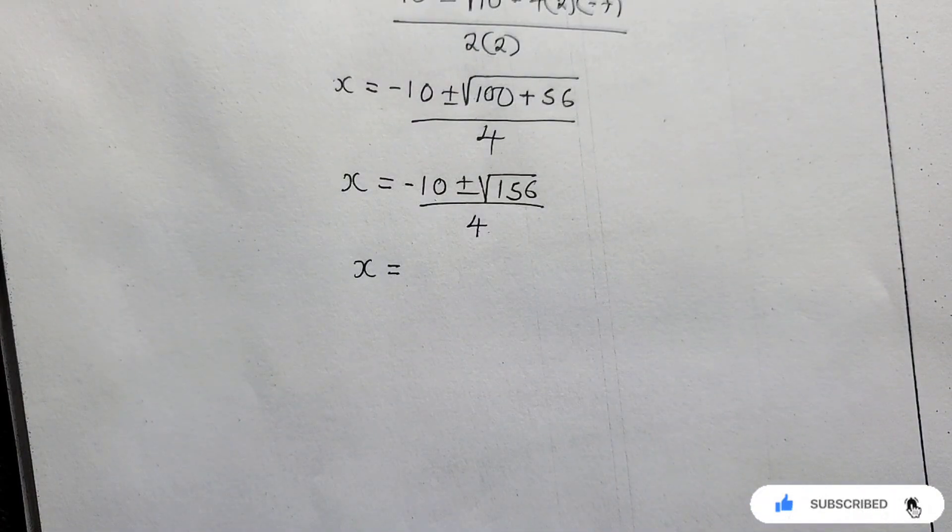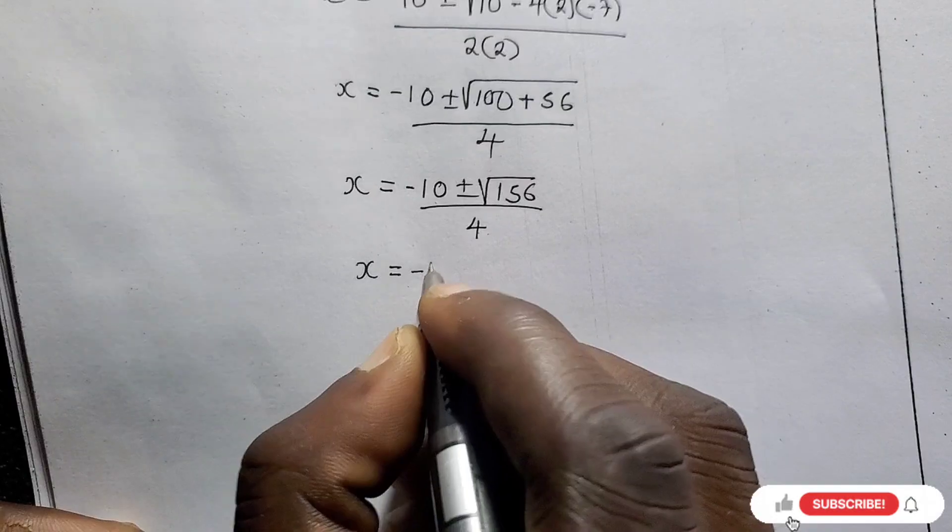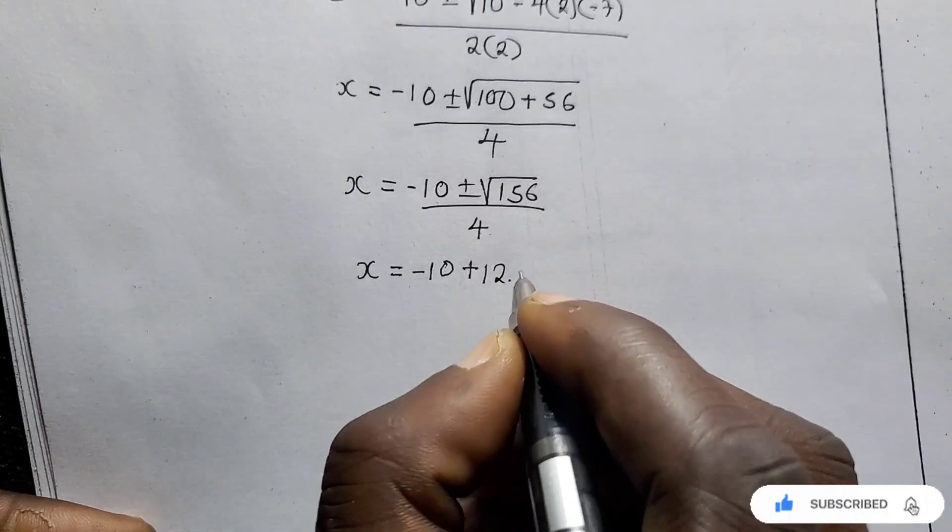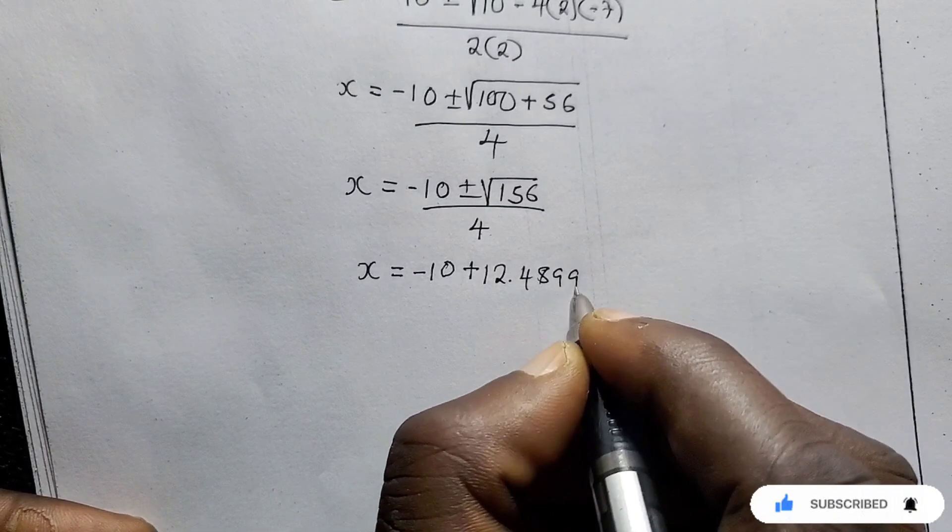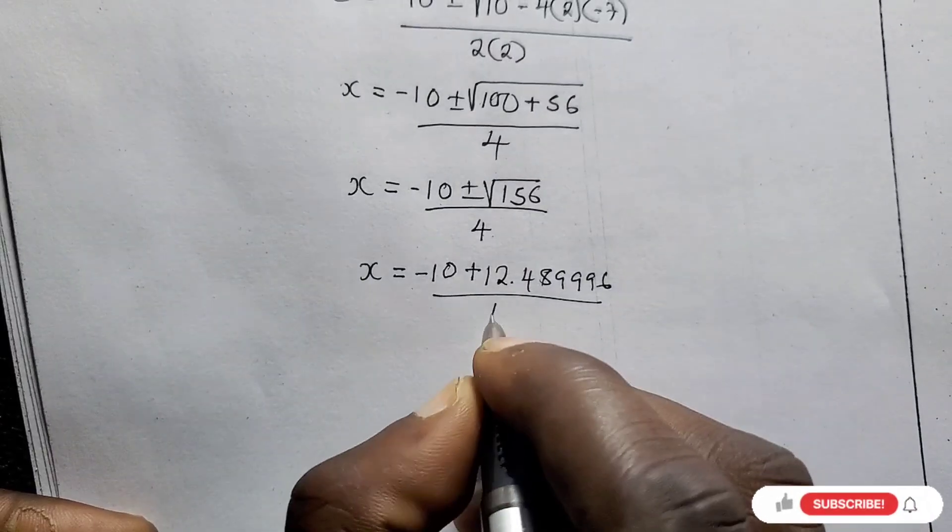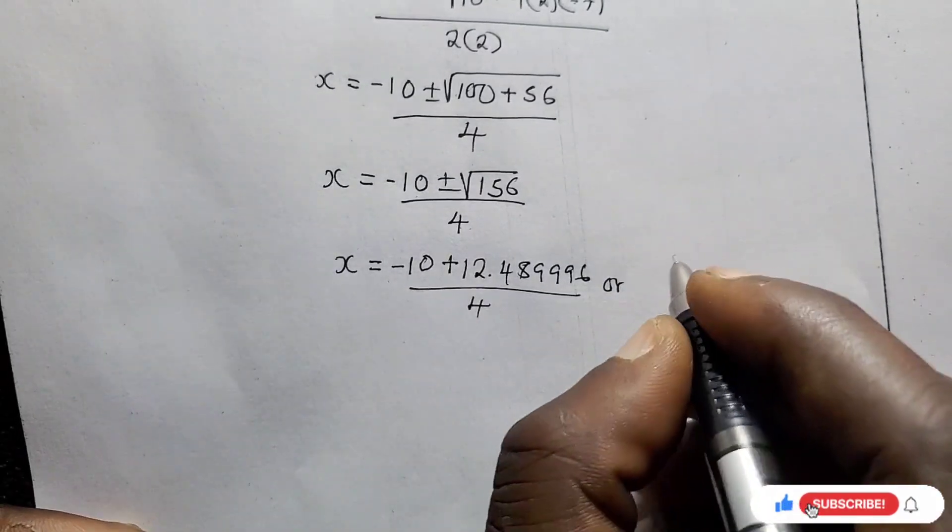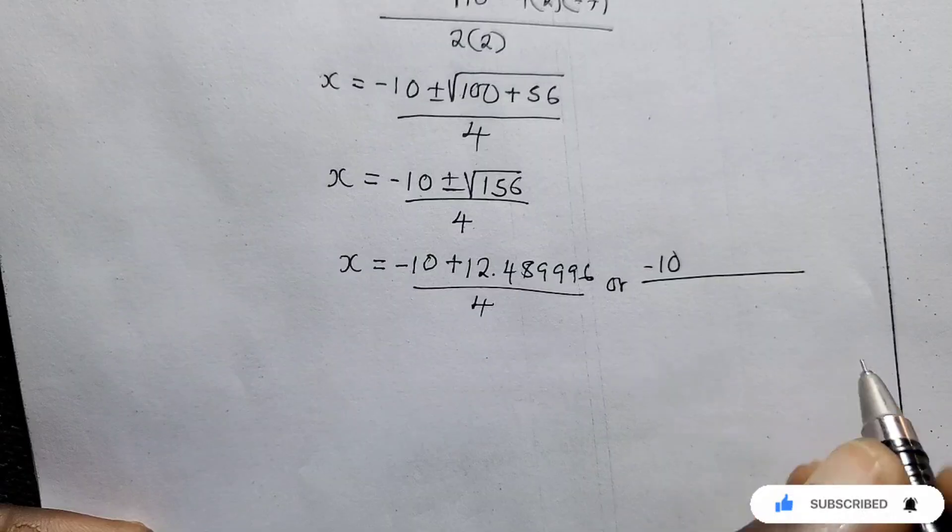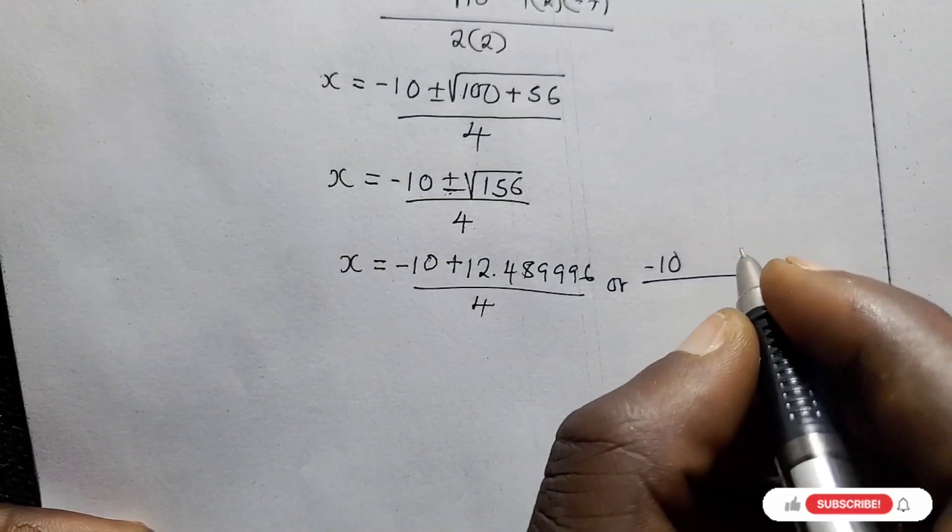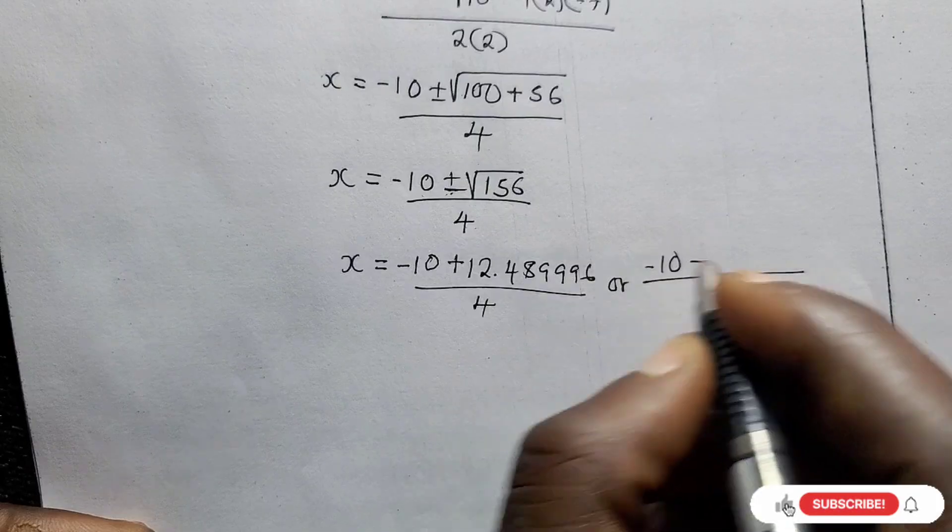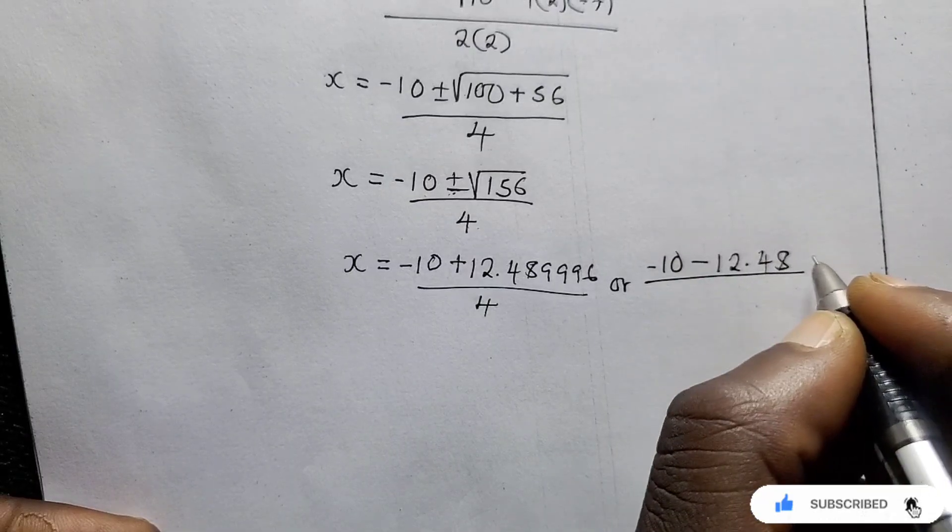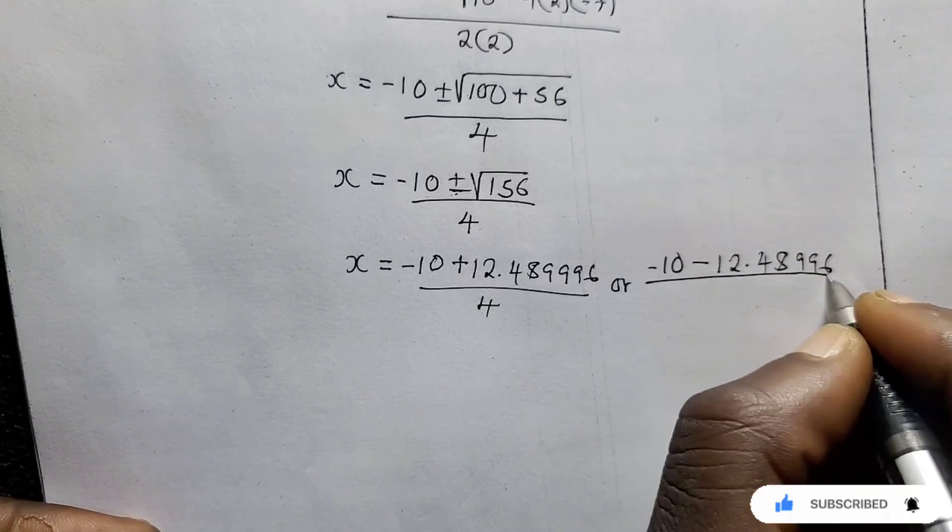So what is the square root of 156? So we're going to say negative 10, let's start with plus. Plus the answer of the square root of 156 which is 12.489996 over 4. Or X equals negative 10. In this case we use minus. We use this minus, minus this one answer, the square root of 156, which is 12.489996 over 4.